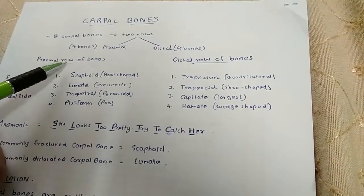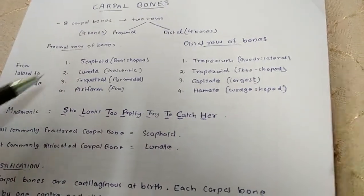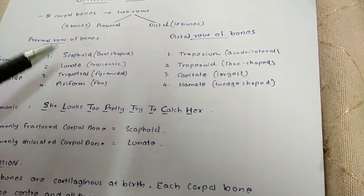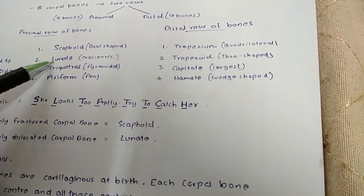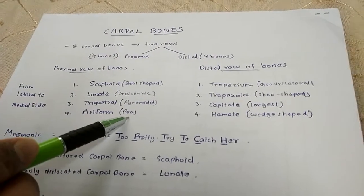The proximal row of bones from lateral side to medial side are scaphoid which is boat shaped, lunate which is crescent shaped, triquetral which is pyramidal shape, and pisiform which is pea shaped.